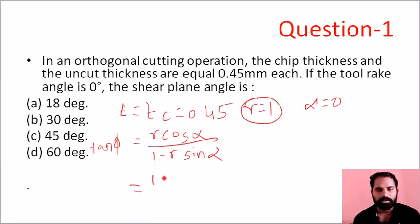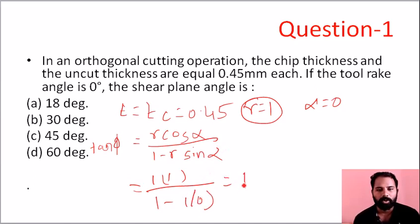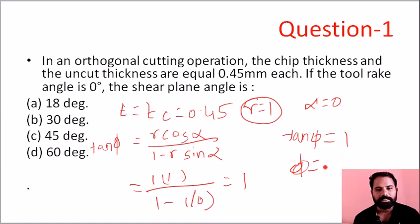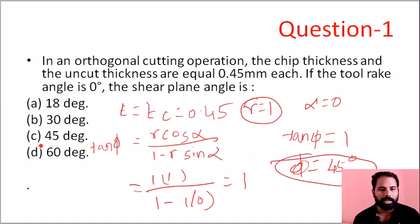R has value T/Tc = 0.45/1 which simplifies to approximately 1 here. Cos α equals cos 0, which is 1. And 1 minus R sin 0 equals 1 minus 0, so the denominator is 1. Therefore tan φ equals 1, and φ equals tan inverse of 1, which is 45 degrees.